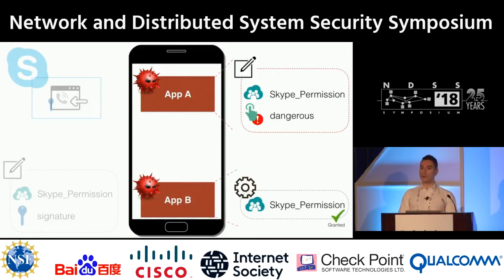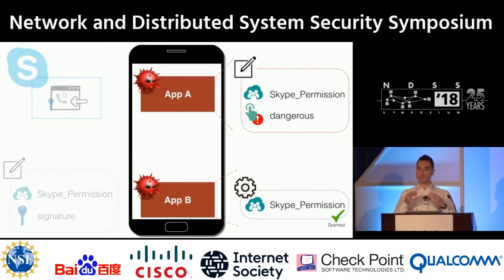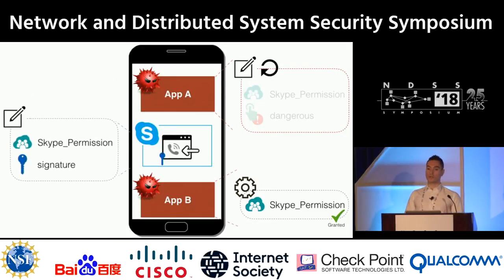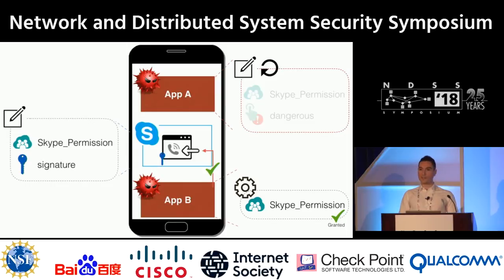Application A can collude with a second adversarial application to get access to Skype's phone-placing functionality. Application B is going to request the custom permission at runtime. The context within which this permission is requested and the text presented to the user is completely controlled by the adversarial apps, so we expect the user to eventually grant the permission to application B. The adversary can then update the first app to remove the declaration of the custom permission, allowing Skype to get installed and declare what it believes to be its own permission to protect its sensitive task. However, application B already has the permission granted in a completely different context and can exploit that to access Skype's sensitive functionality — starting calls to premium numbers or calling a remote adversarial domain to spy on the user's device.